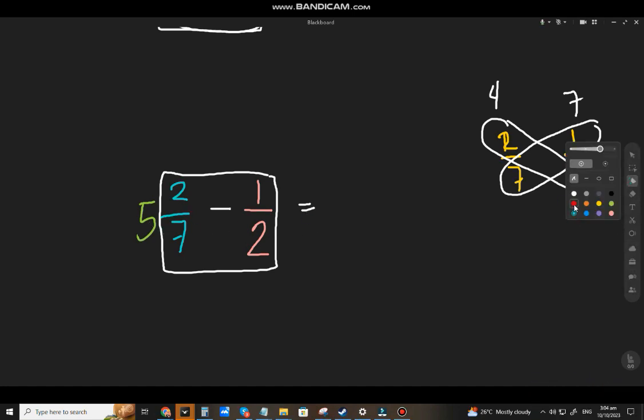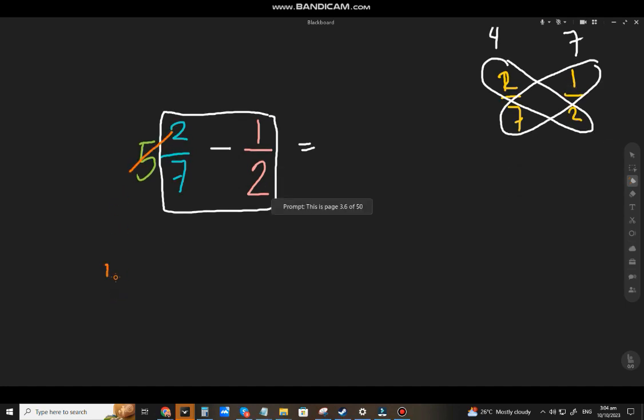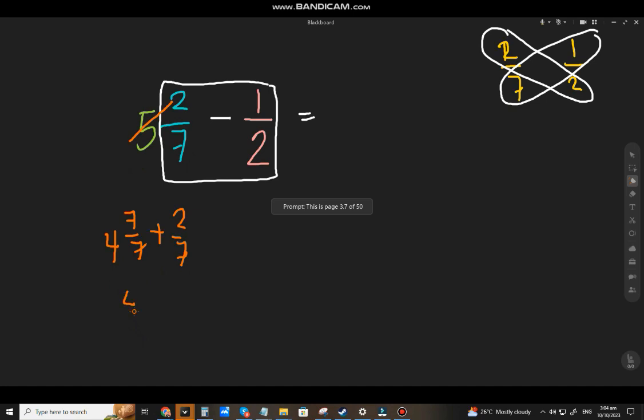So, borrow tayo kay 5. Hingi tayo ng 1 oh. So, that will be 4 and 7 sevenths. Kokopi mo yung sa denominator. Bibis ka dito. Plus mo ng 2 sevenths. That will be 4 and 9 sevenths. Tapos pwede mo nang, kaya na yung 9 sevenths yan. 1 half.